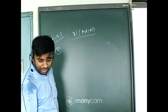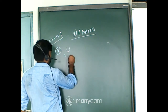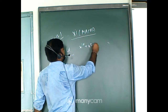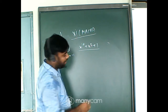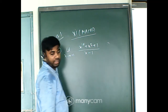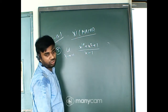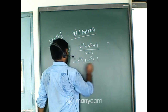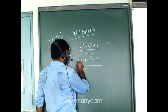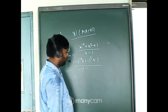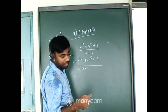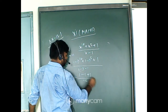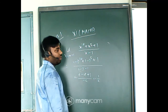Question number five: limit x tends to minus 1 of (x¹⁰ + x⁵ + 1)/(x − 1). You can use the direct substitution method. Putting x equal to minus 1: (−1)¹⁰ minus (−1)⁵ plus 1, over (−1 − 1). Since (−1) to an even power is +1, that gives 1 + 1 − 1 over minus 2, which is minus 1/2.